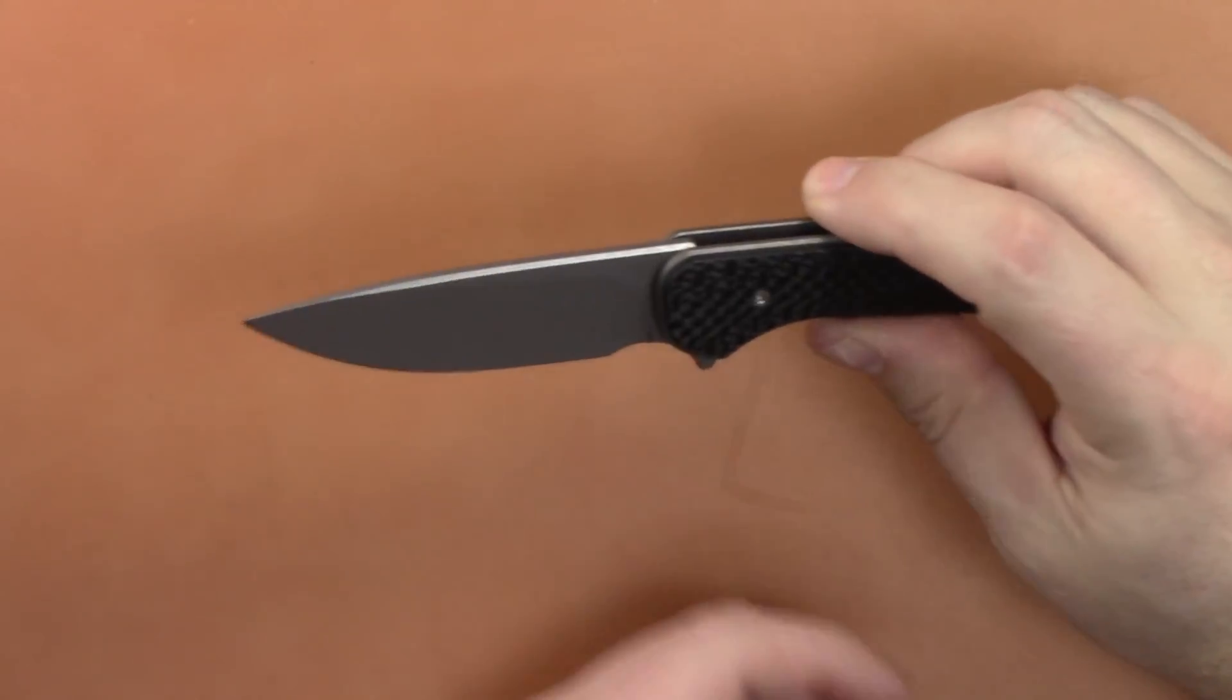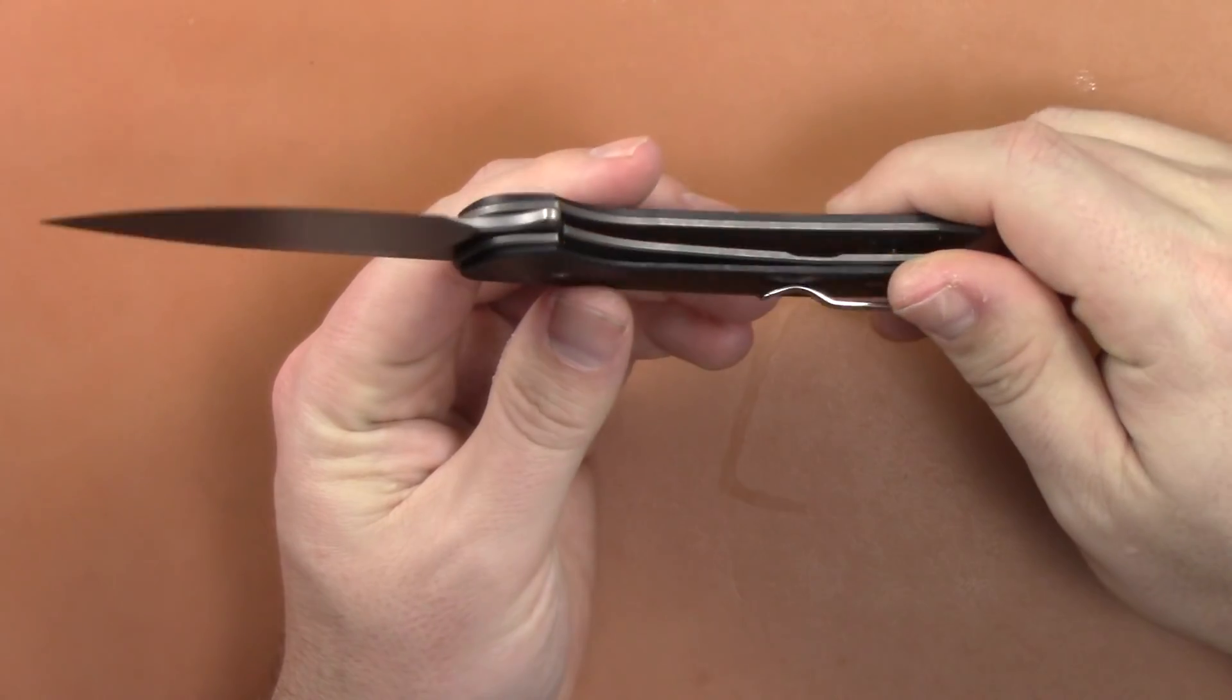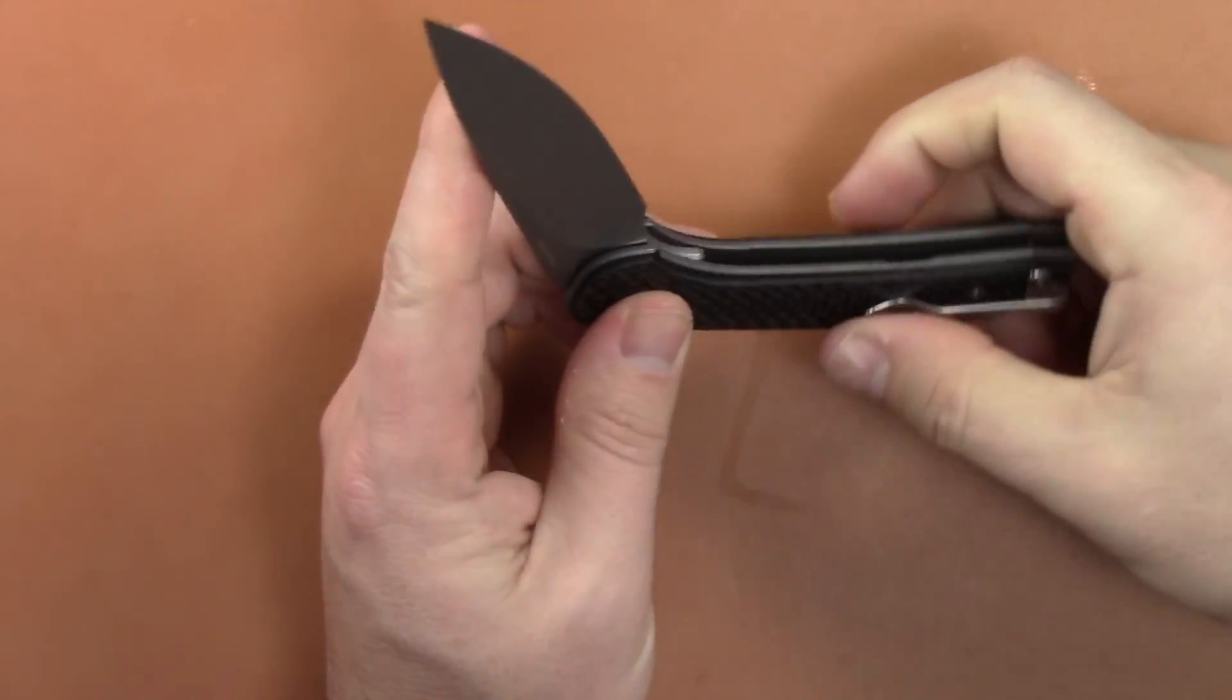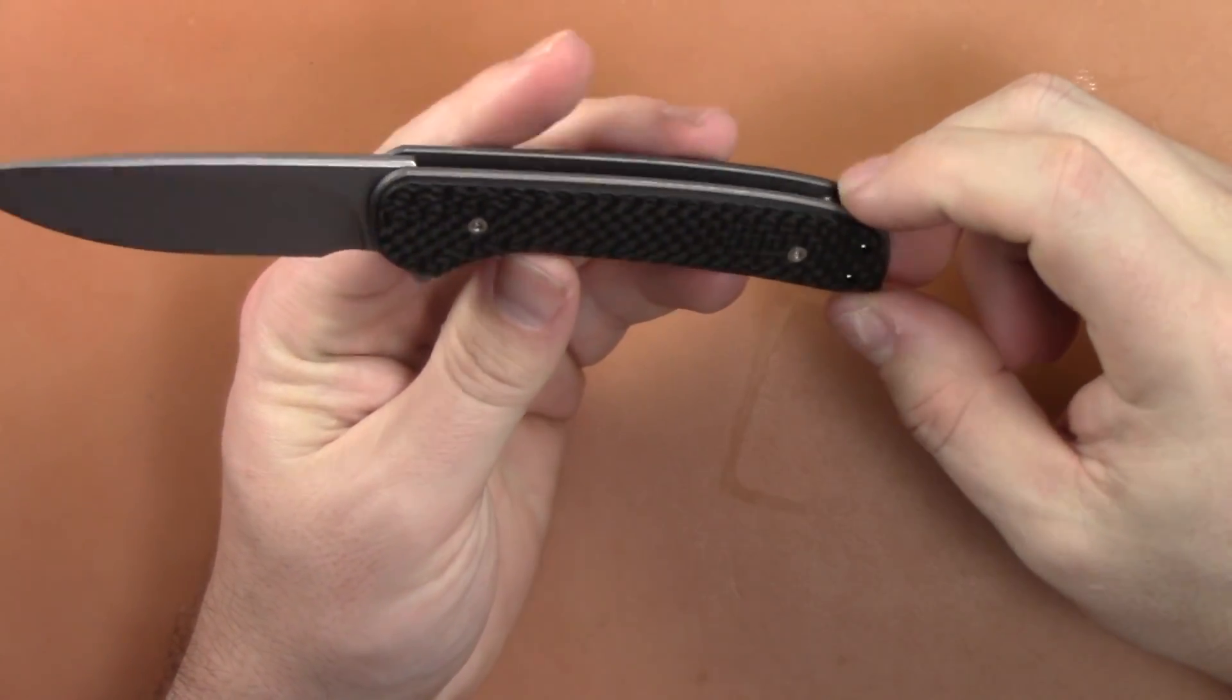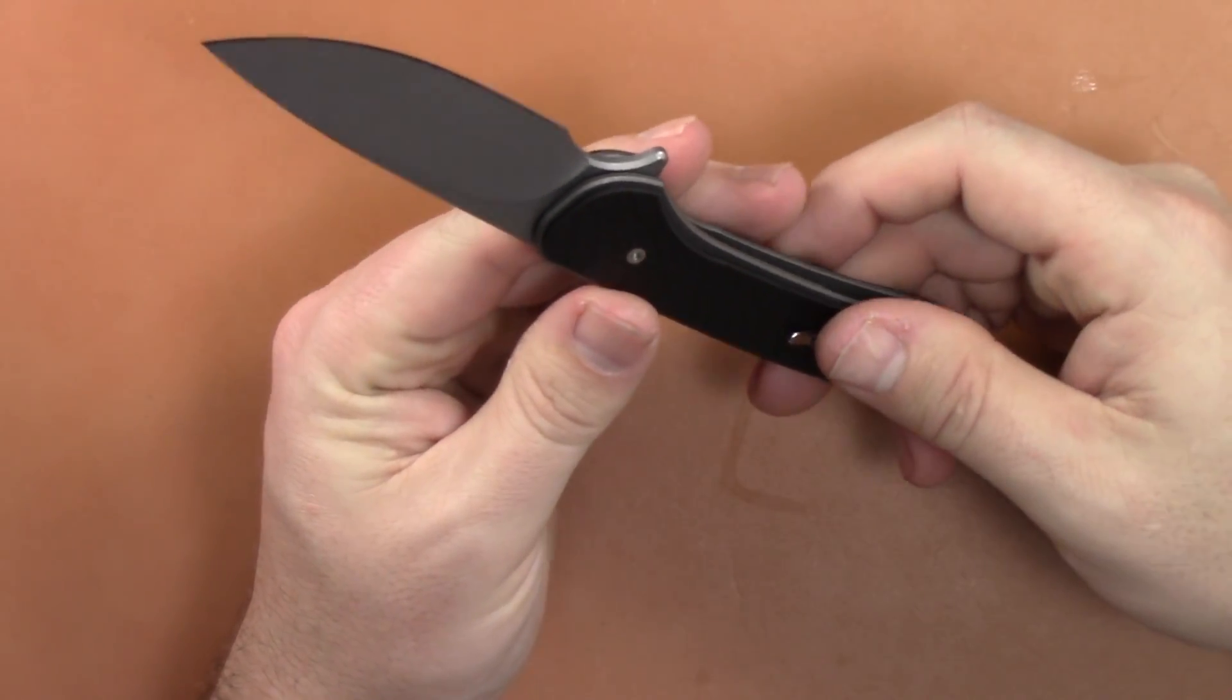It's hard to beat. This carbon fiber is really nicely done. You've got a deep, almost acid wash stonewash finish on the titanium scales and on the blade - still S35VN steel.